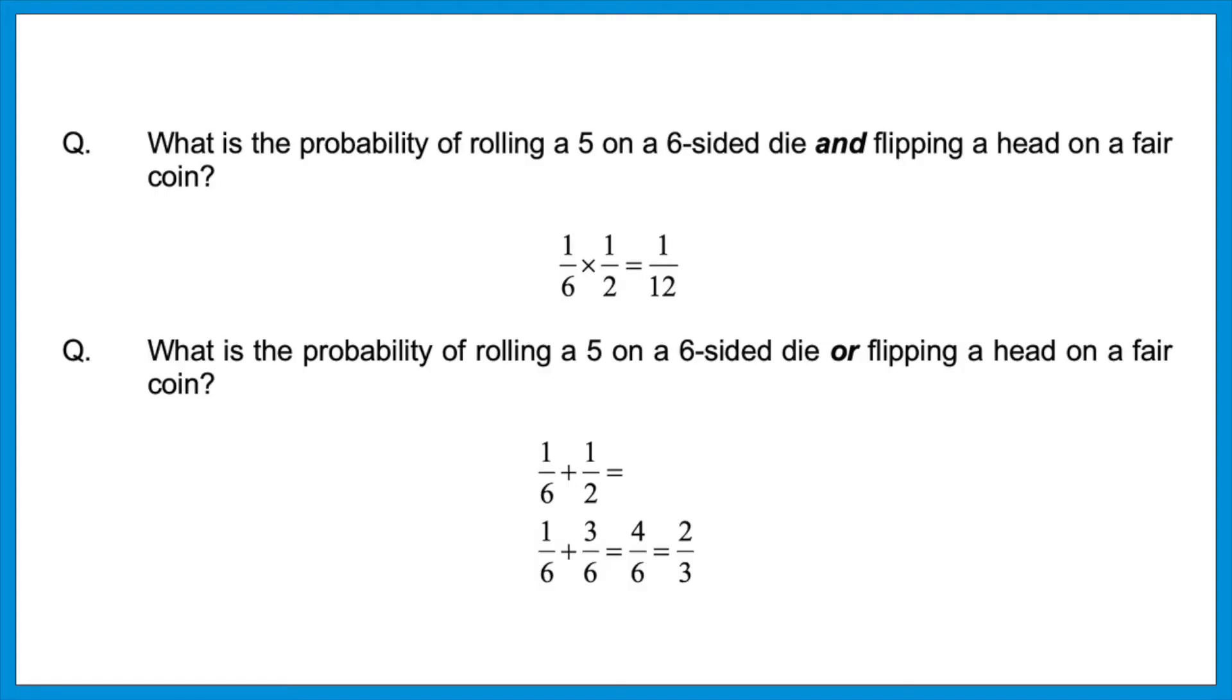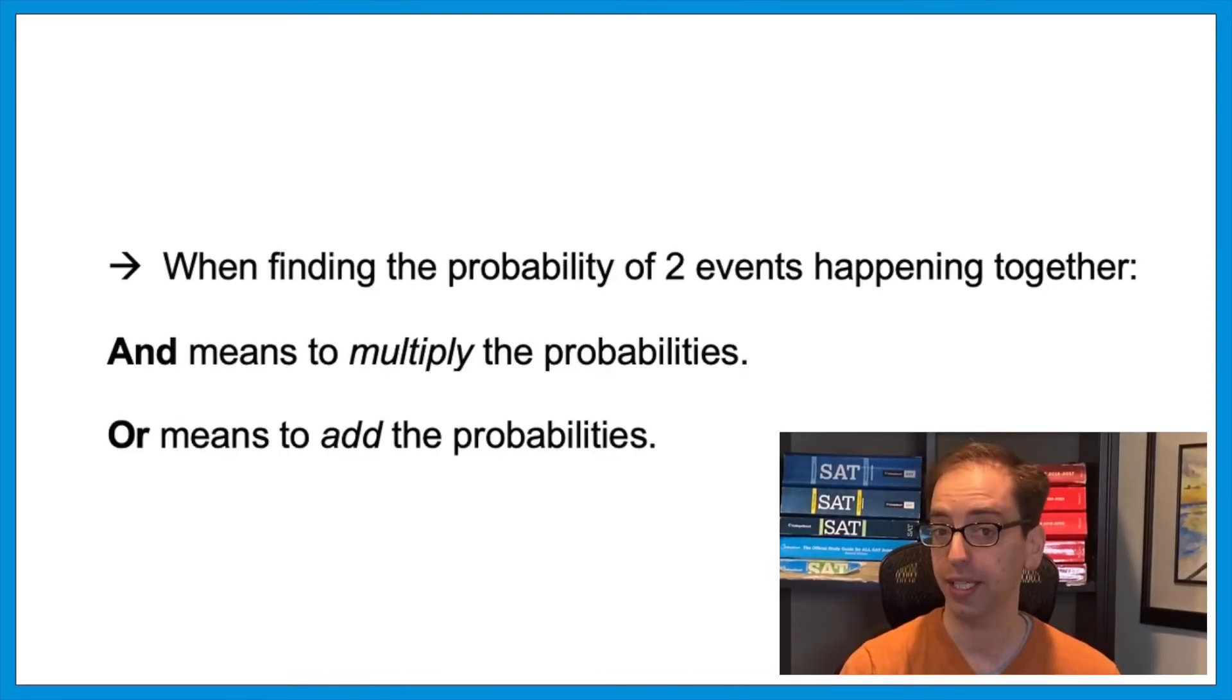Here's another topic that's become more popular on the ACT over the last year or two. Let's start easy, then we'll get harder. What is the probability of rolling a five on a six-sided die and flipping a head on a fair coin? And then the next one, what is the probability of rolling a five or flipping a head on a fair coin? Notice the words in bold here, AND versus OR. Those each mean different math steps. If they want the probability of A and B, that means that you multiply the given probabilities. So the probability of rolling a five would be one-sixth, and then the probability of flipping a head is one-half. Multiplying that would give us one over twelve. But if they say OR, it means we need to add those probabilities. One-sixth plus one-half. Getting common denominators would ultimately give us four over six, or two-thirds. So, when finding the probability of two events happening together, AND means to multiply the probabilities, and OR means to add the probabilities.